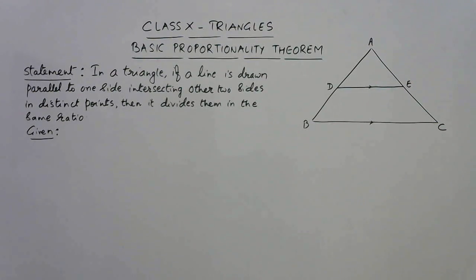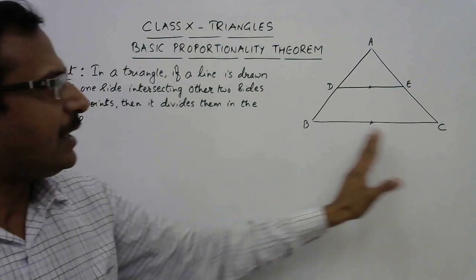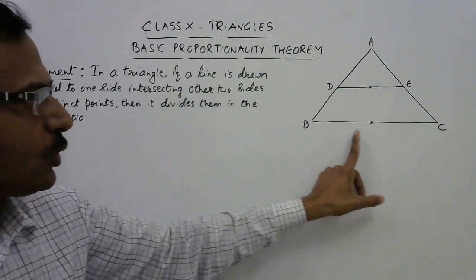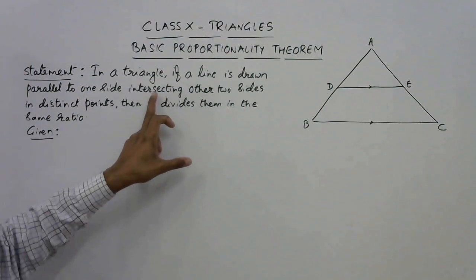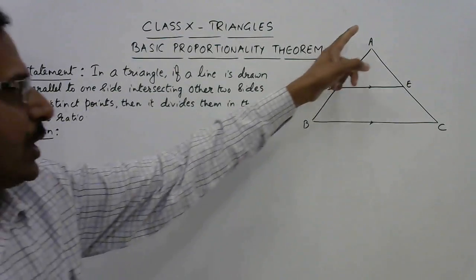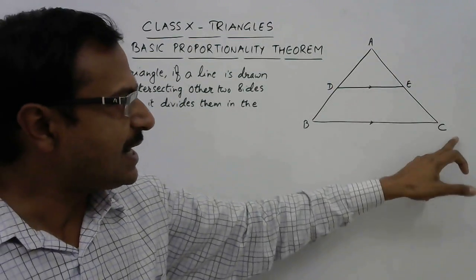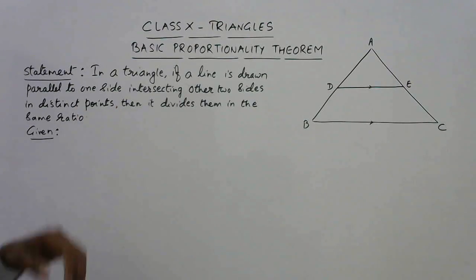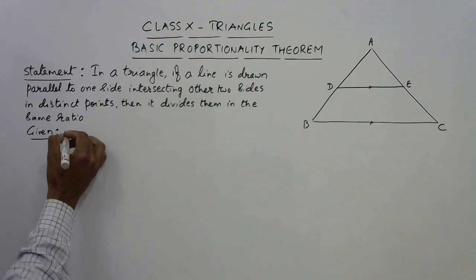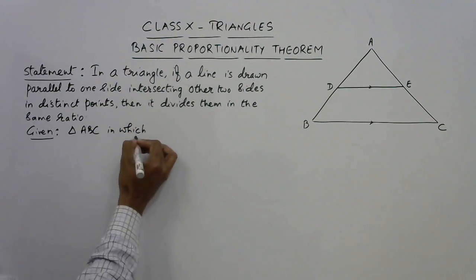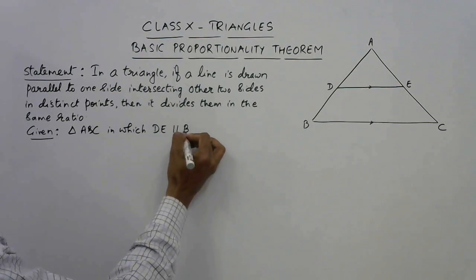This is the Basic Proportionality Theorem. The statement of this theorem you need to remember, and it goes like this. In a triangle — now this is triangle ABC — if a line is drawn parallel to one side, so this line DE is drawn parallel to one side that is BC of the triangle, intersecting the other two sides in distinct points. The other two sides means AB and AC. So this line DE is intersecting AB at D and AC at E. There is a triangle ABC in which we have drawn a line DE which is parallel to the side BC.